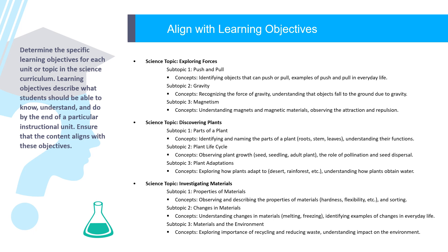Step 3: Align with learning objectives. Determine the specific learning objectives for each unit or topic in the science curriculum. Learning objectives describe what students should be able to know, understand, and do by the end of a particular instructional unit. Ensure that the content aligns with these objectives. Here are examples of topics and sub-topics from primary science that could be analyzed in terms of their content, order, depth, and coherence.